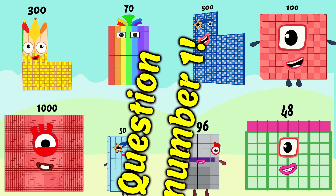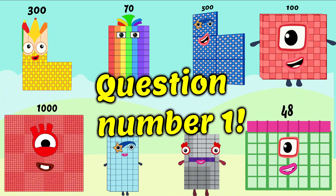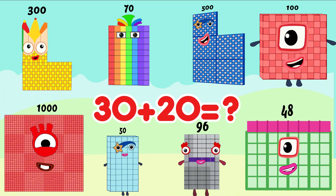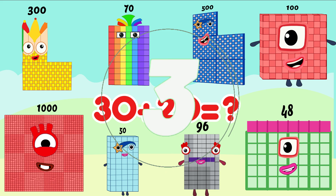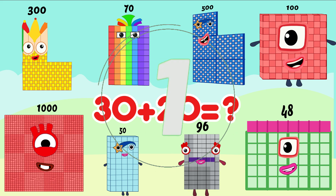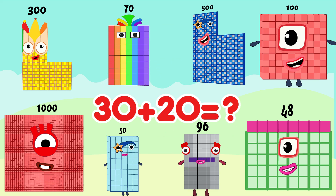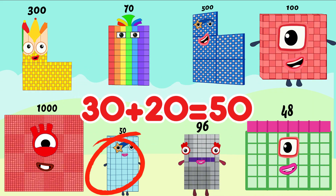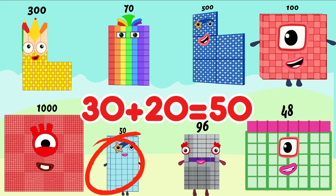Question number 1. 30 plus 20 is equal. Is correct answer. 30 plus 20 is equal 50.